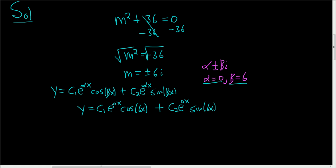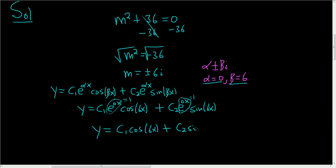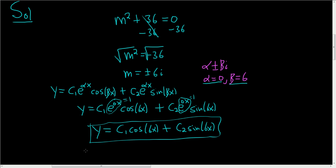Now we simplify. E to the 0x is e to the 0, so this piece here is just equal to 1. Likewise, this piece here is just equal to 1. The final answer is y equals c1 cosine 6x plus c2 sine of 6x.